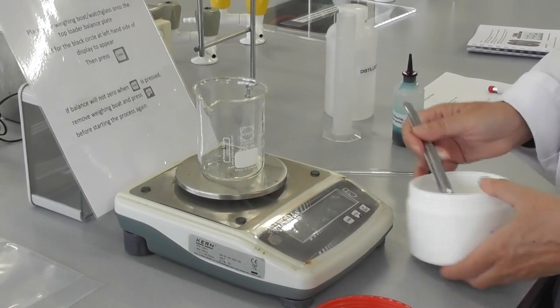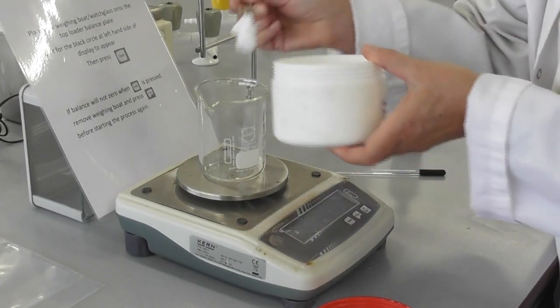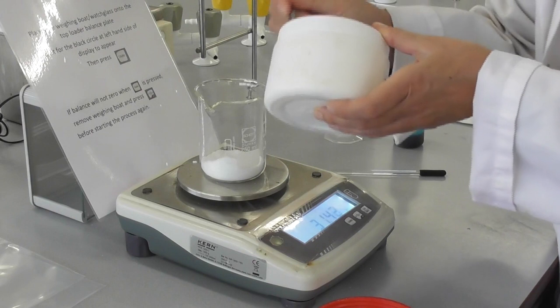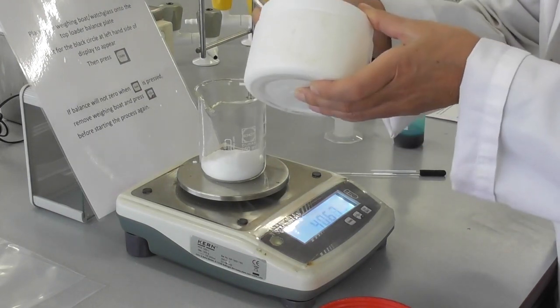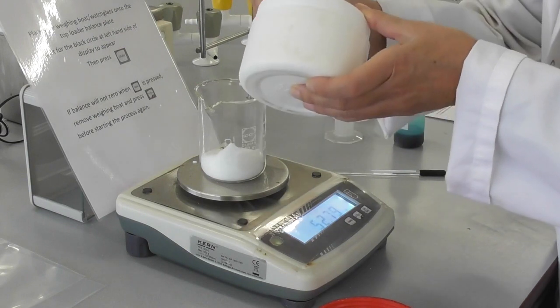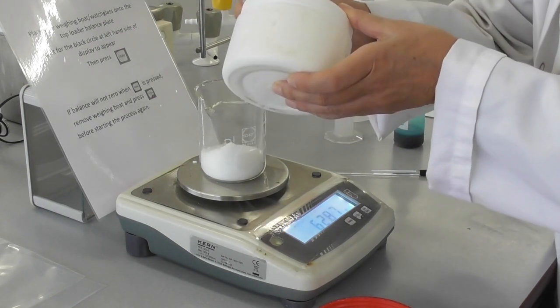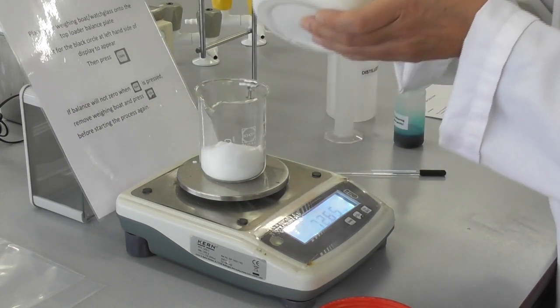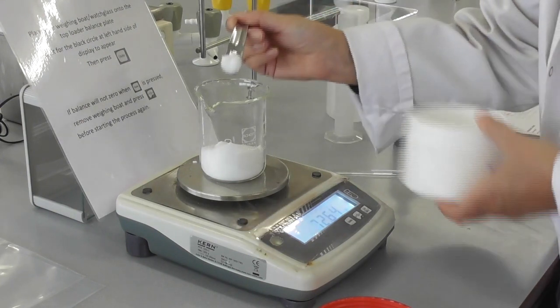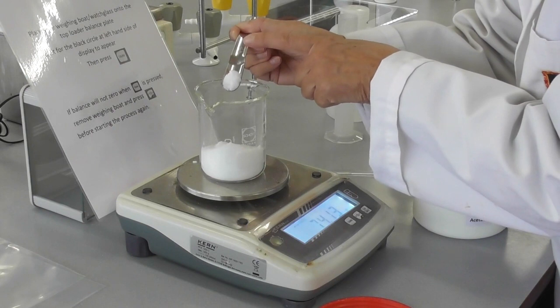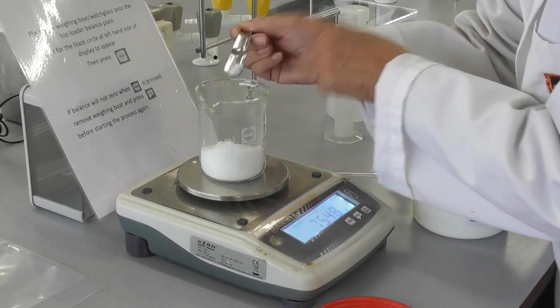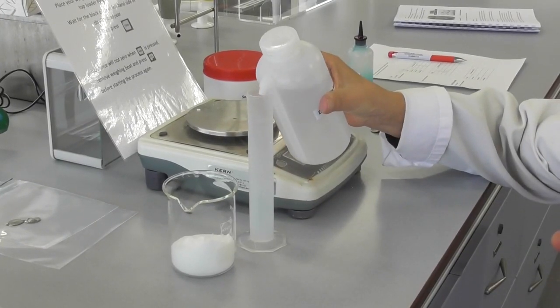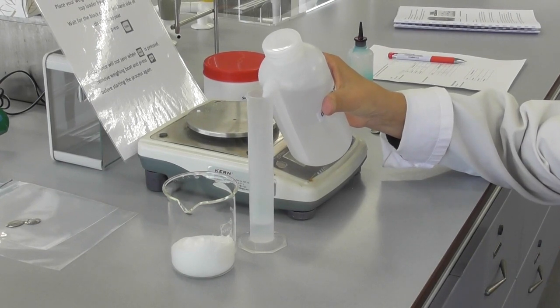We start by weighing out 75 grams of sodium acetate into a 250 ml beaker. Next, we measure out 25 ml of distilled water.